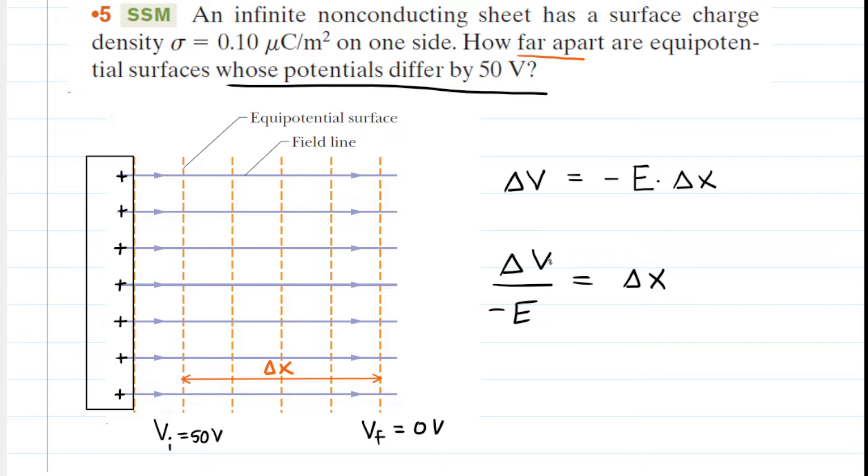Delta V could be expanded as the final potential minus the initial potential, and that would be divided by negative of the electric field. So everything is looking pretty good here because we have the final, we have the initial. We don't yet have the electric field.